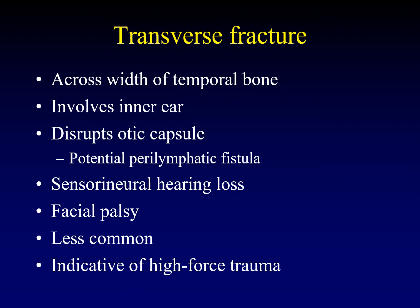Transverse fractures run across the width of the temporal bone, perpendicular to the axis of the petrous apex. They tend to involve the inner ear and the otic capsule because they have no choice — they don't have that path of least resistance and have to go all the way through the petrous apex. This can result in a perilymphatic fistula if the perilymph and endolymph leak out into the middle ear cavity. They tend to result in sensorineural hearing loss. If the fracture line runs through the tympanic segment of the facial nerve, they can cause facial palsy — a frequently overlooked complication shared with longitudinal fractures.